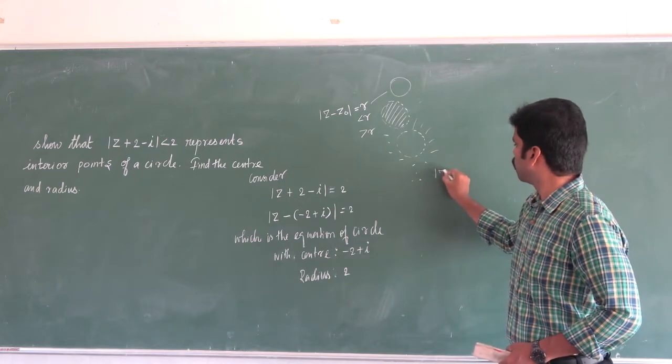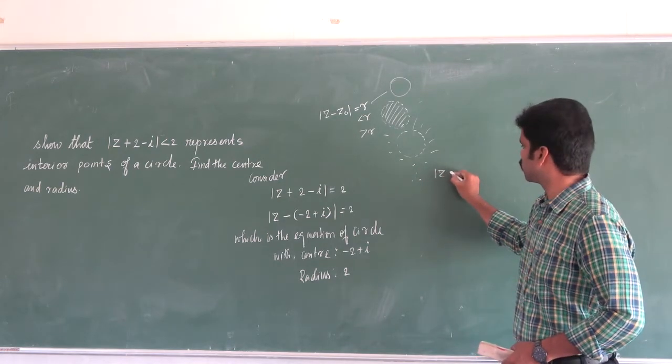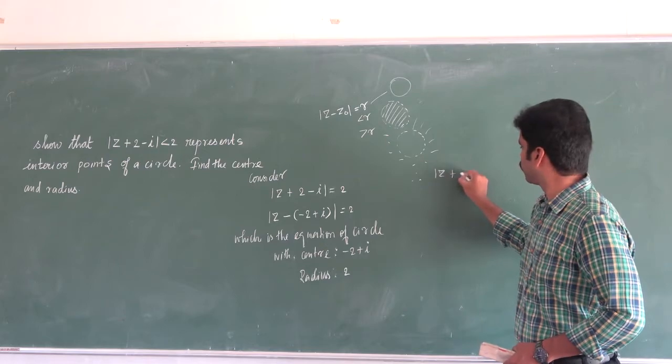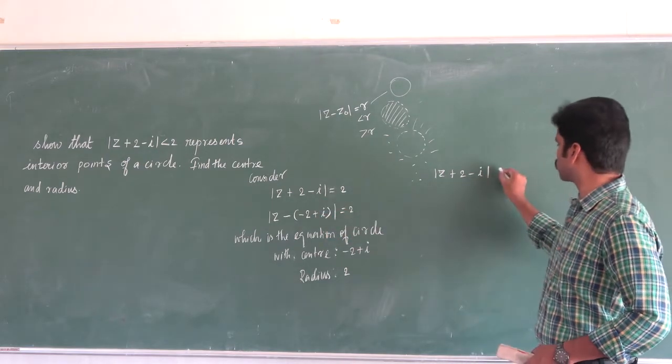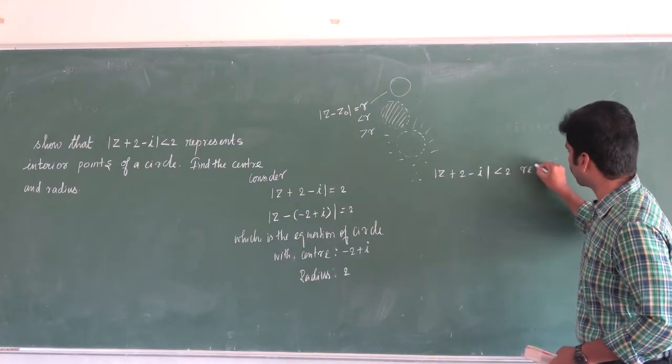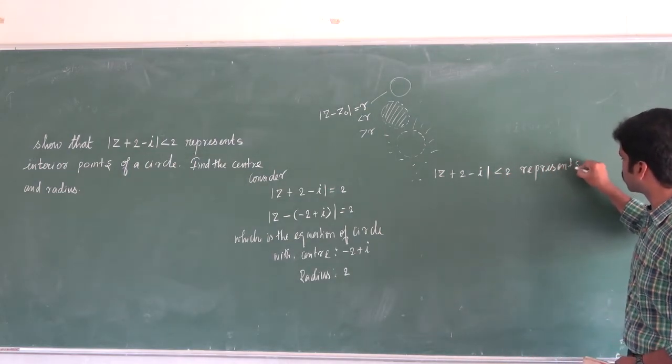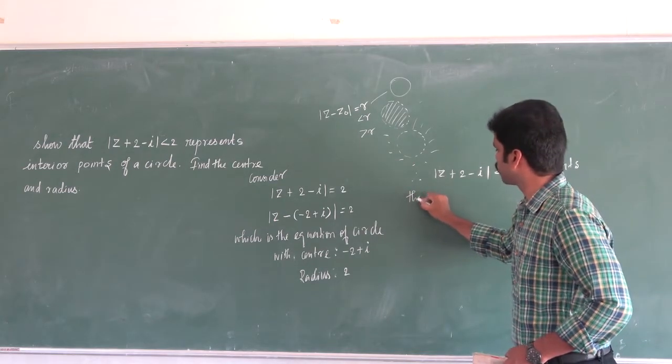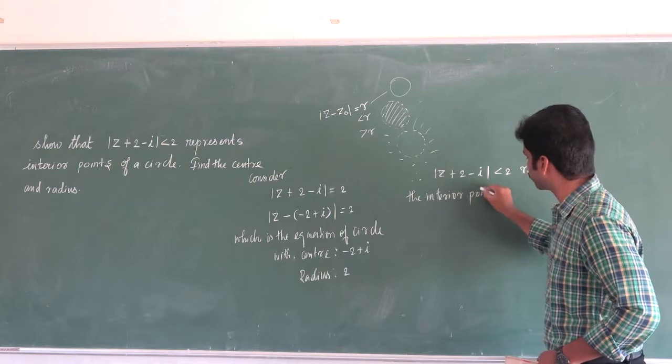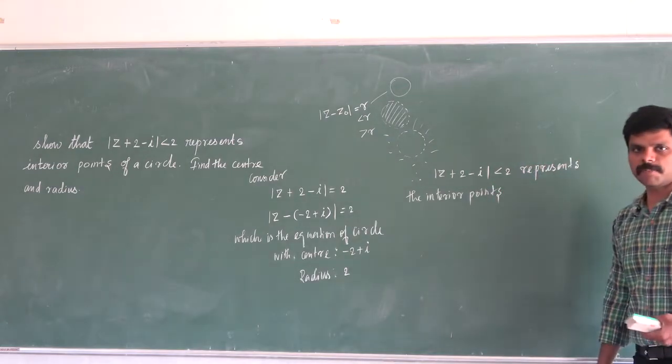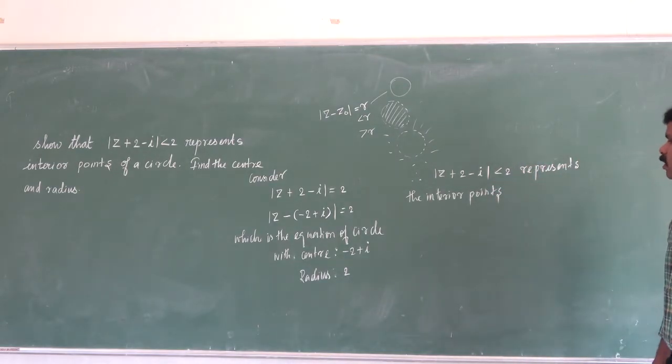So, therefore, modulus of z plus 2 minus i less than 2 represents the interior points. It represents the interior points, okay?